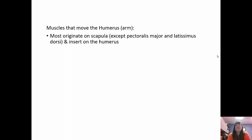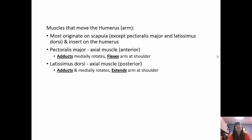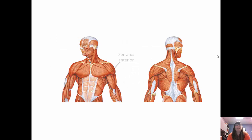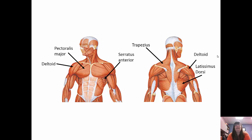Most muscles moving the humerus originate on the scapula and insert on the humerus. The pectoralis major adducts, medially rotates, and flexes the arm at the shoulder. The latissimus dorsi, on the posterior, adducts, medially rotates, and extends the arm at the shoulder. The deltoid forms the shoulder mass, abducts and medially rotates, and flexes and extends the arm; it originates on the clavicle and scapula — specifically the acromion process and spine — and inserts on the deltoid tuberosity of the humerus.